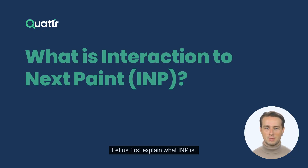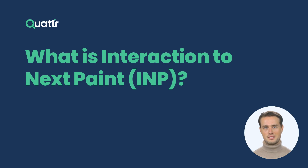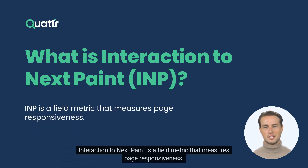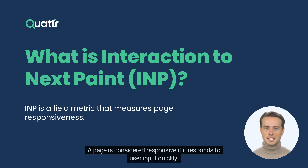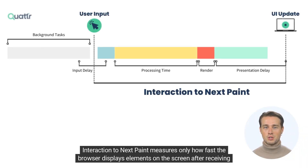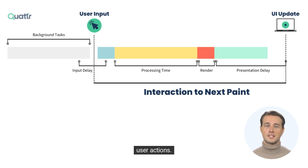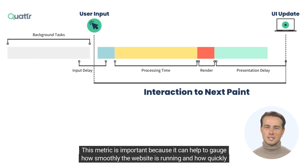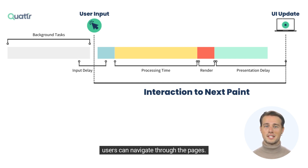Interaction to Next Paint is a field metric that measures page responsiveness. A page is considered responsive if it responds to user input quickly. INP measures only how fast the browser displays elements on the screen after receiving user actions. This metric is important because it can help gauge how smoothly the website is running and how quickly users can navigate through the pages.